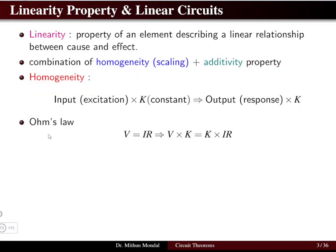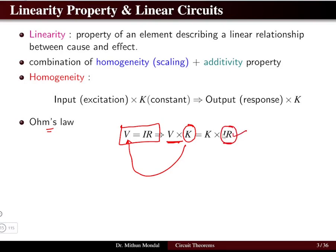Let us take the example of Ohm's law: V = I × R. If we multiply a constant k to the input side — the voltage, so V × k — then on the output side we have the response I × R, where R is the resistance. If we multiply this with k, we get the same response. The cause-and-effect relationship is linear because it obeys the principle of homogeneity.